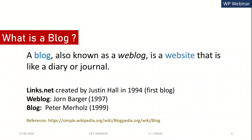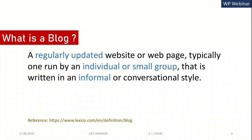The title of that blog was links.net. The term 'web blog' was coined by John Berger in 1997 and it was shortened by Peter Mahals in 1999. Extending the definition a little bit, a blog is a regularly updated website, typically run by an individual or a small group of people, written in an informal or conversational style.